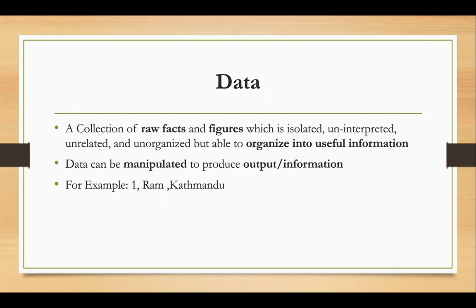We can use raw facts. For example, the number one is data, RAM is data — these are individual pieces of data. By combining particular data pieces, we can produce meaningful information. One can be a roll number, or one can be a name of a province — it can be anything, like a capital city. Alone, it doesn't give information.